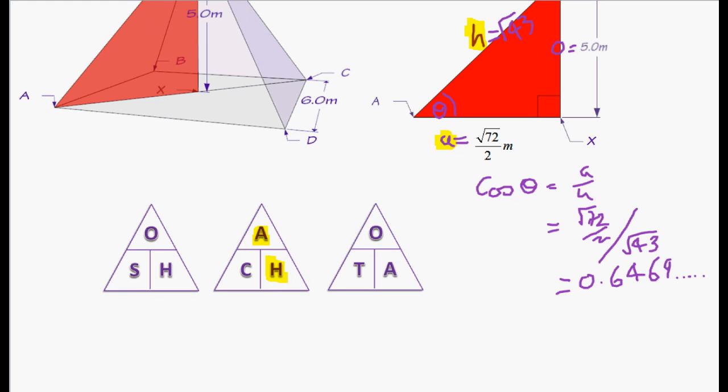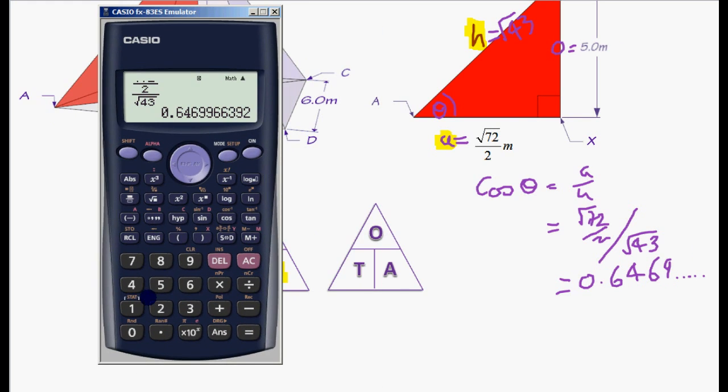Here we go. To finish off the question. Bring the calculator back. That is our value for our theta. Sorry. Not theta. Cos of theta. What we want to do is work out theta. So we have got cos theta equals that. So we have to undo that using the shift cos. The inverse cos. Of our answer. To get our angle. And our angle comes out to 49.68.